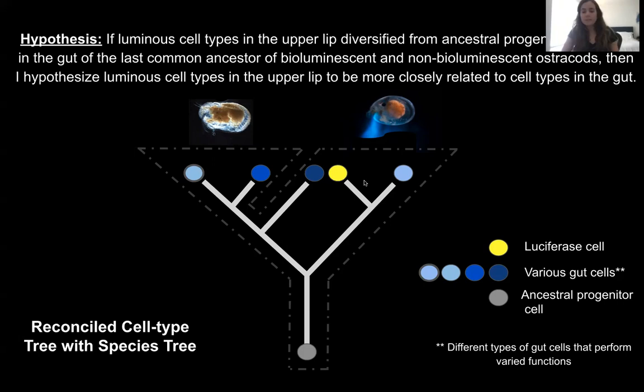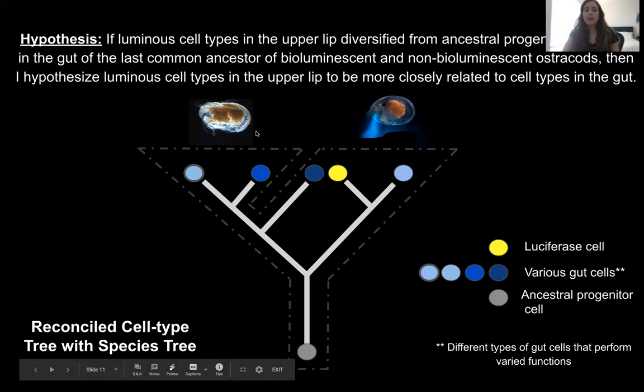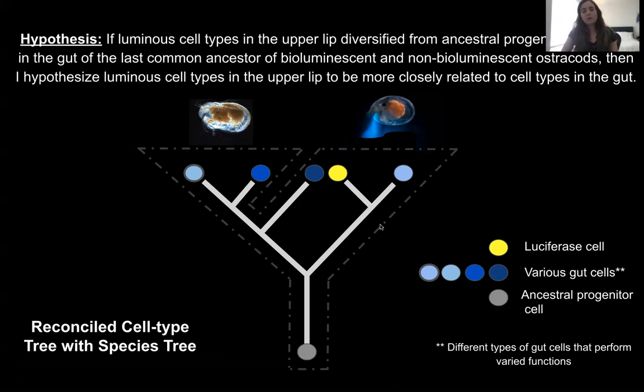Just as we use gene trees and species trees to understand the relationship of genes and species, we can use cell type trees reconciled with a species tree to illustrate homologous cell types across species and sister cell types within species. Sister cell types are when the cell type originated from an ancestral progenitor cell within the species. From preliminary analysis, I hypothesize that luminous cell types diversified from ancestral progenitor cells in the last common ancestor of non-bioluminescent and bioluminescent ostracods, involving the origin of novel specialized cell types such as luciferase and luciferin cells.